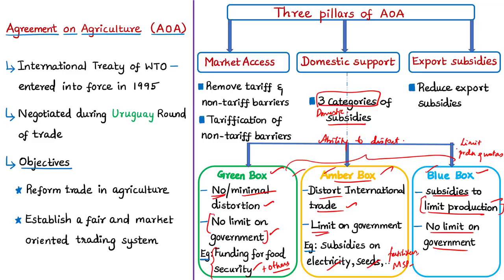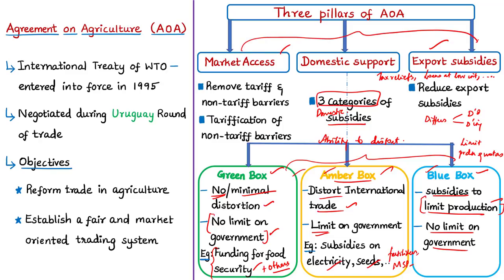The third pillar is export subsidies, which aim to encourage export of goods through measures such as loans at low interest and tax relief to exporters. This agreement requires member countries to reduce export subsidies. Similar to the first pillar, the WTO has mentioned guidelines that differ for developed and developing countries over different time periods. The Agreement on Agriculture mainly commits member countries to limit domestic support to farmers and exporters of agricultural products.